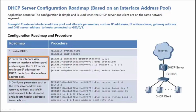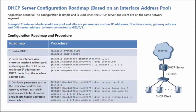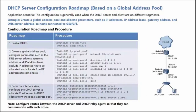Step 2: Enter the view of GE0/0/1. Create an Interface Address Pool and configure the DHCP Server to allocate IP Addresses to DHCP Clients from the Interface Address Pool. Step 3: Configure related network parameters in the Interface Address Pool.